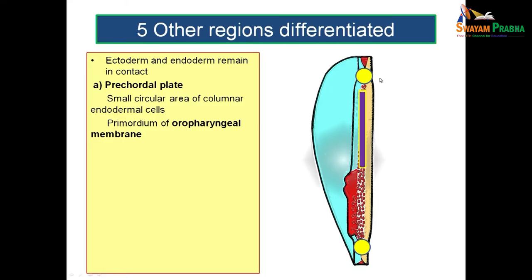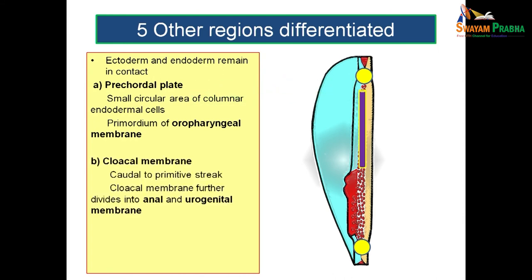The pre-cordal plate gives rise to the oropharyngeal membrane, which must rupture to make a communication between the oral cavity and the primitive gut tube. Similarly, at the caudal region, there is the cloacal membrane — lying caudal to the primitive streak — which is further divided into the anal membrane and urogenital membrane by the urorectal septum coming down to meet it.